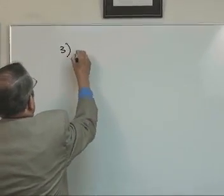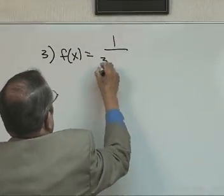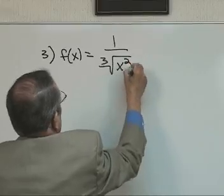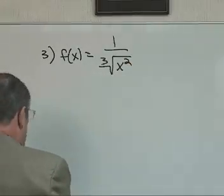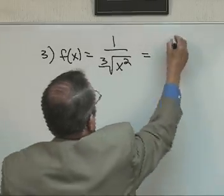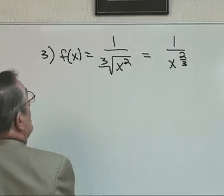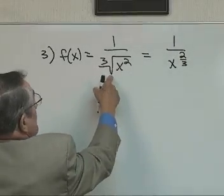Here's the third problem. If f of x is equal to 1 over the cube root of x squared. So the first thing we want to do is convert this to 1 over x to the 2/3. We want to get rid of that radical.